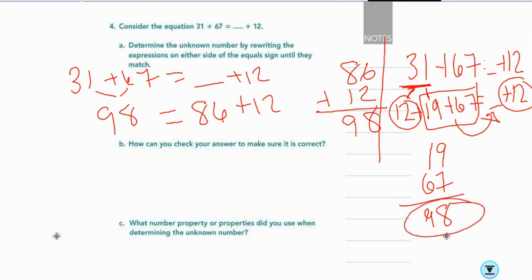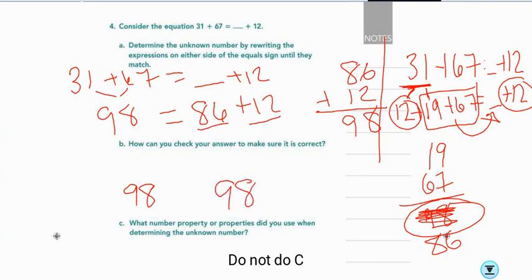So we can check our answers by substituting. So I added these, and I got 98 on this side. And if I take 86 plus 12, 86 and 12 is going to be 98. And those are equal.